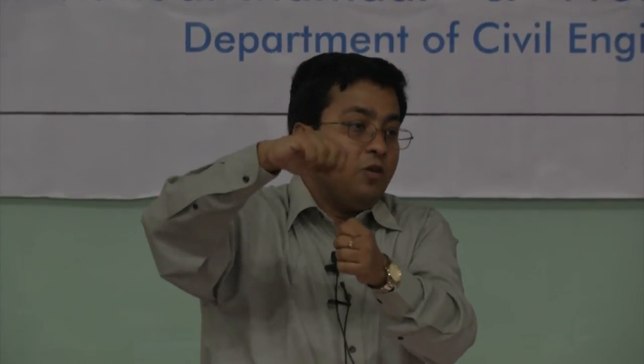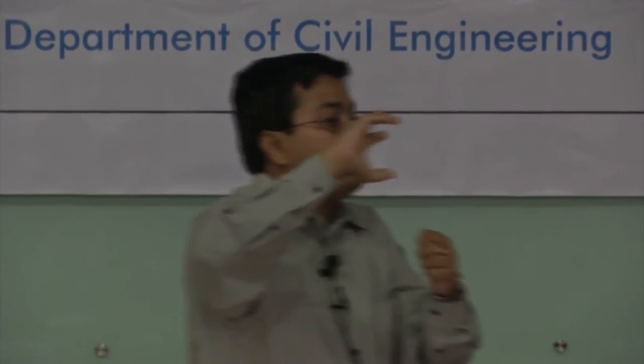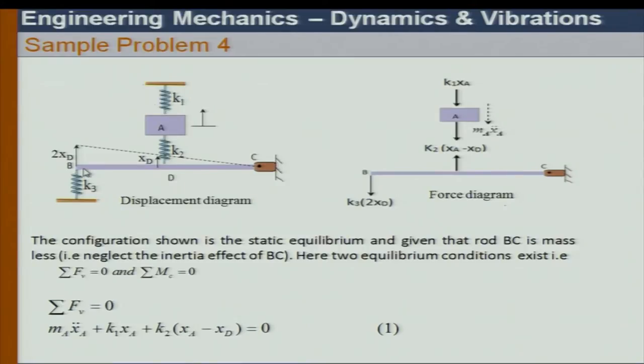In the series spring case we could convert it to a single degree of freedom system because one degree of freedom is statically related to the other. Since there is no mass on one of the springs, let X_A be the displacement at one end and X_D at the other — those are my two degrees of freedom.